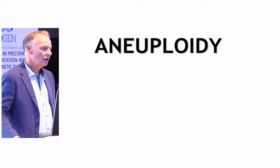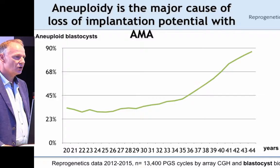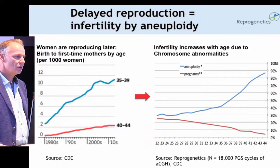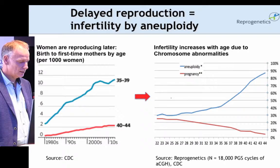As you know, chromosomal abnormalities and aneuploidy increase with advanced maternal age from 30% to 80%, depending on maternal age. This is basically the sole cause of the loss of implantation potential with advanced maternal age. In the last 20 to 30 years, people have been delaying reproduction in order to pursue career and education.